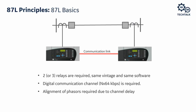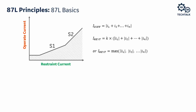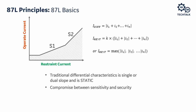We need to align phasors — this is the most difficult part of the differential, technically speaking. Looking at the traditional percent differential characteristic: there is a minimum pickup zone, slope one and slope two zones, representing the traditional operate and restrained differential characteristic. The differential is the sum of all zone input currents. For restraint we have two approaches: the sum of absolute values of all zone input currents, or the maximum of zone input currents. It's a compromise between sensitivity and security.